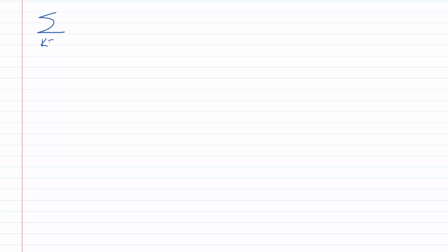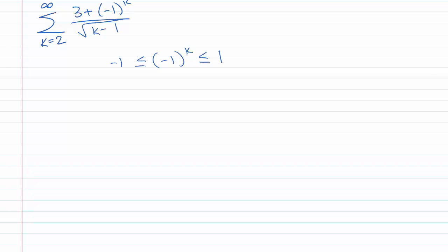Let's look at another example: the sum k goes from 2 to infinity of 3 plus negative 1 to the k, all over the square root of k minus 1. We know that negative 1 to the k flips between negative 1 and 1. So 3 plus negative 1 to the k flip-flops between 2 and 4. On the bottom, we have square root of k minus 1, and we know that square root of k minus 1 is less than square root of k.